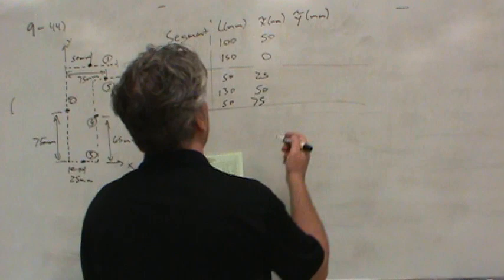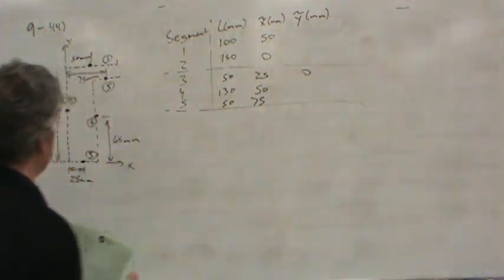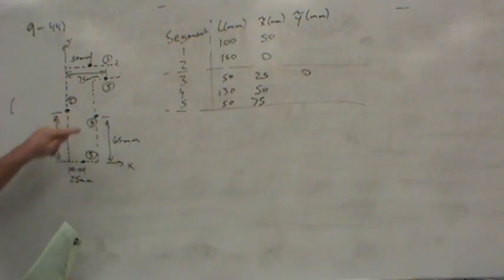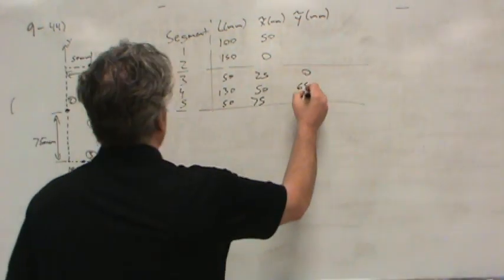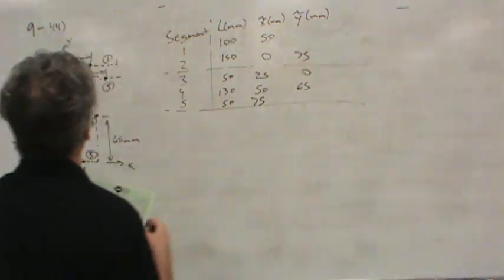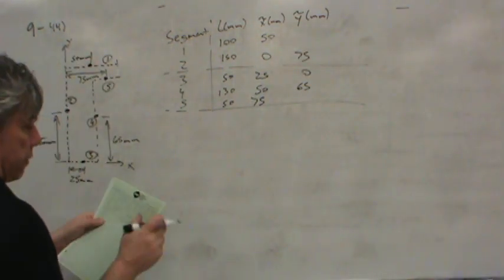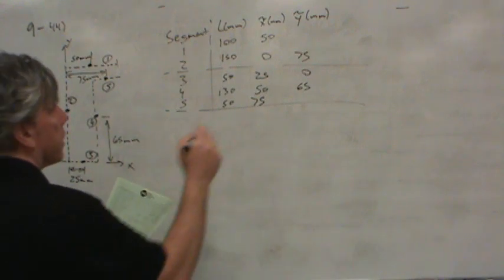So next I wanted y-bar, and that's pretty easy for segment three, for example, it's zero because it's right on the y-axis. For segment four it's 65 millimeters. For segment two it's 75 millimeters. For segment one it's all the way up, which I think is 150. Let me find it on my sheet. Yeah, it said 150.